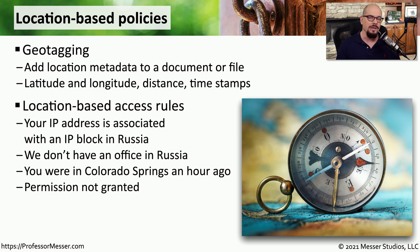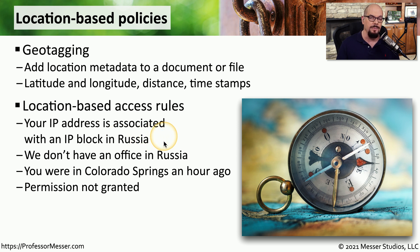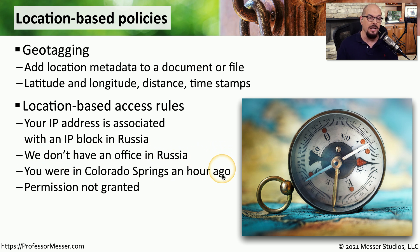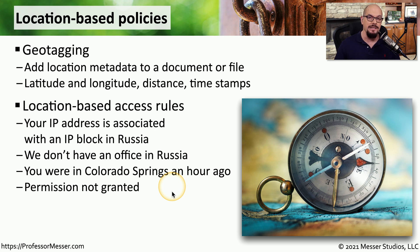You can take all of these different location-based policies and combine them into one single permission. For example, you can check an IP address and see that someone trying to log in is associated with an IP address block assigned to Russia. You would notice that we don't have an office in Russia, and perhaps more importantly, that user was in Colorado Springs just an hour ago. This makes it very difficult to believe this user could now somehow be located in Russia, so the user would not be granted permission to log in and additional security controls may be applied because the account could be compromised.